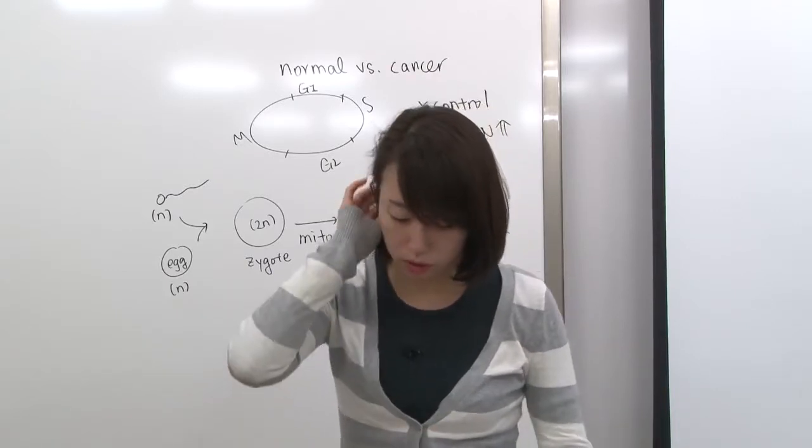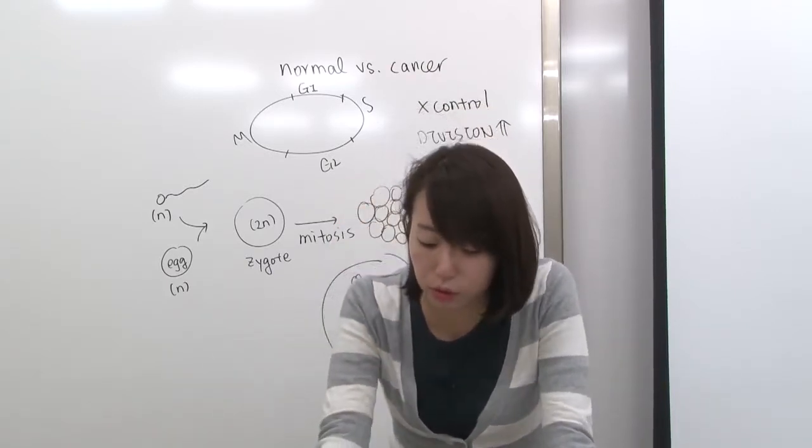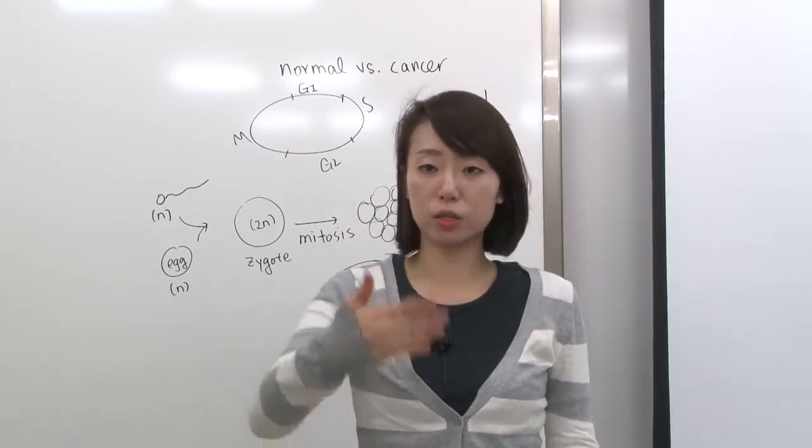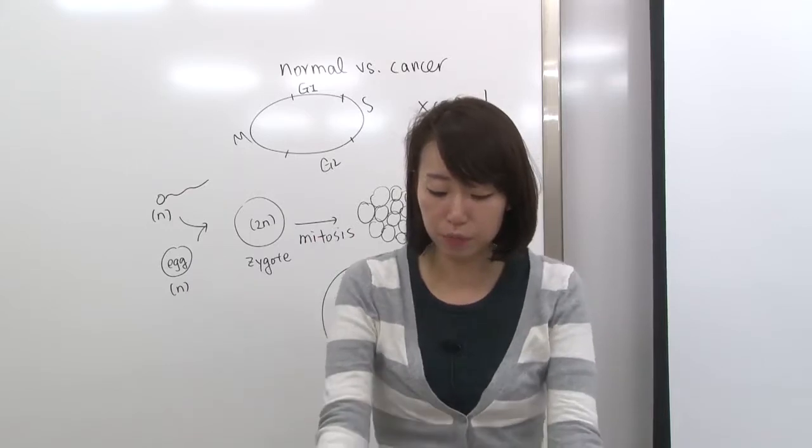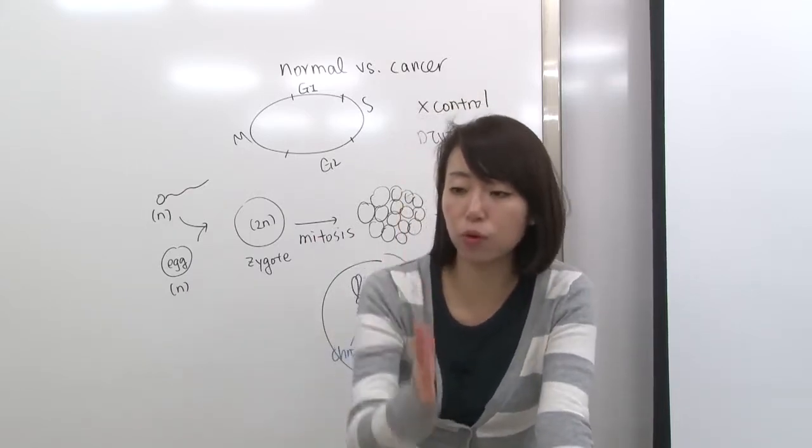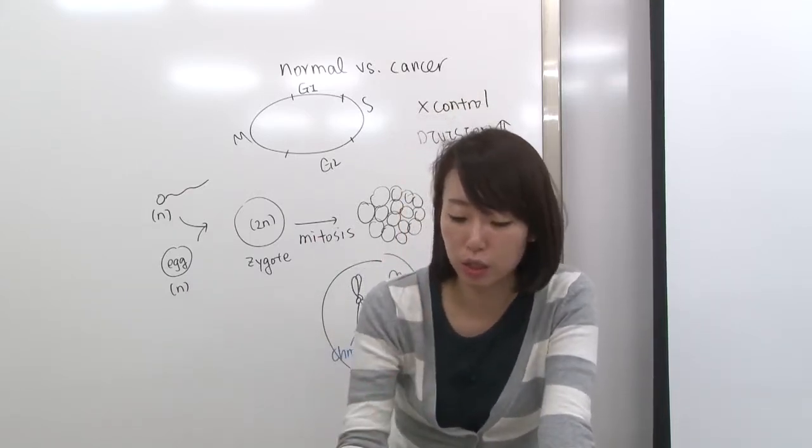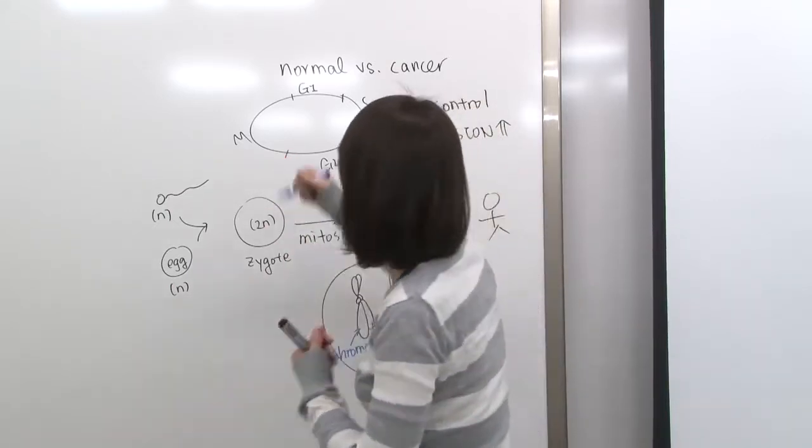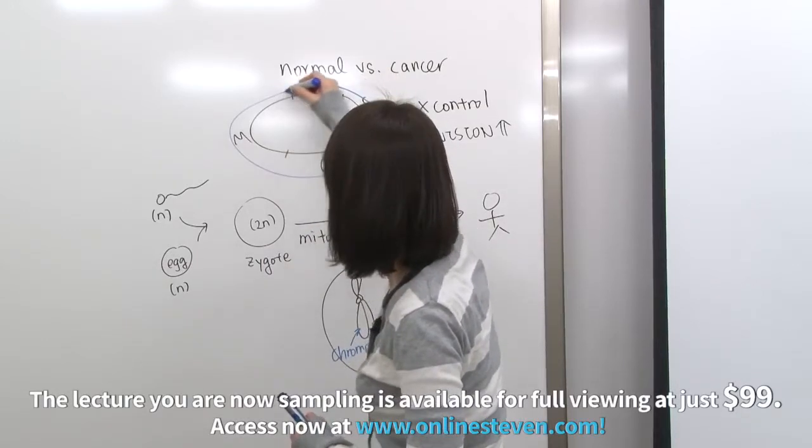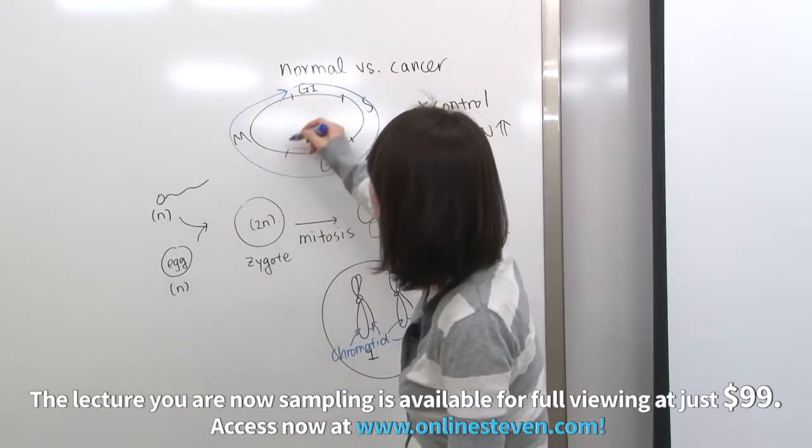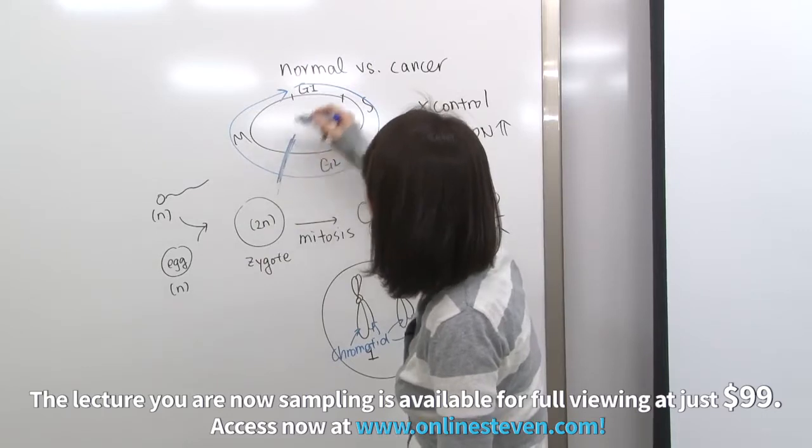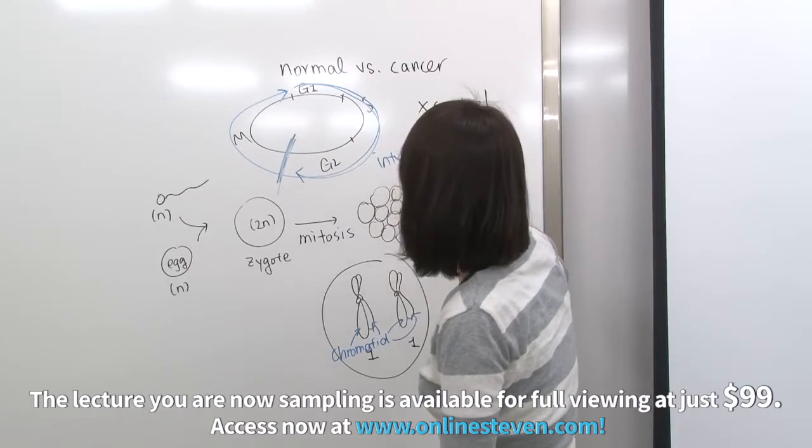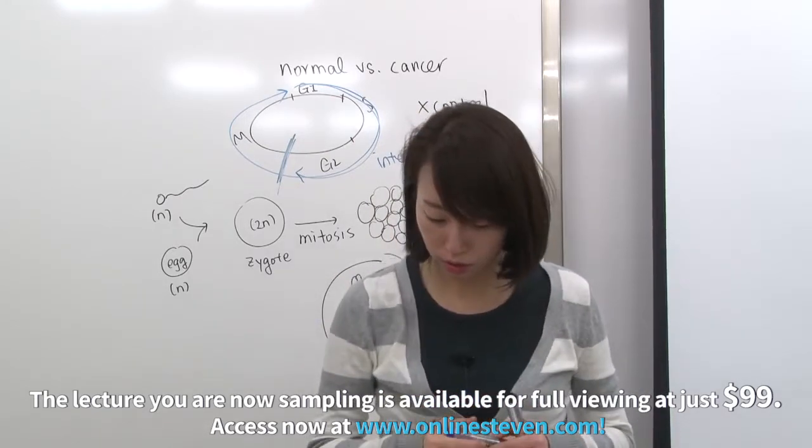In which stage in the life of a cell is the nucleolus visible? Nucleolus starts to disappear at the first stage of the mitosis or meiosis. So before the prophase starts, actually, you can see the nucleolus. So before the prophase. So this phase is called interphase. So during the interphase, you can see nucleolus.